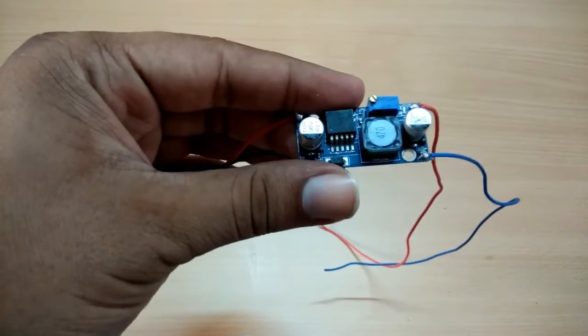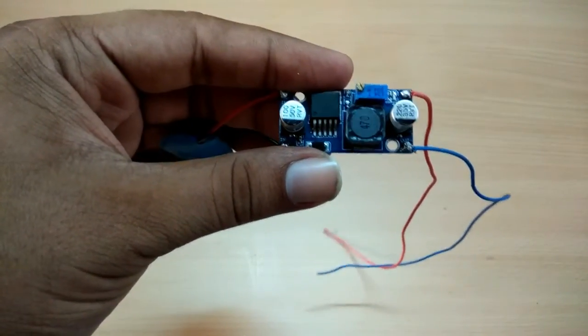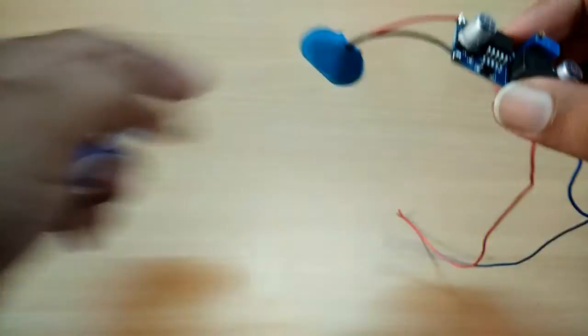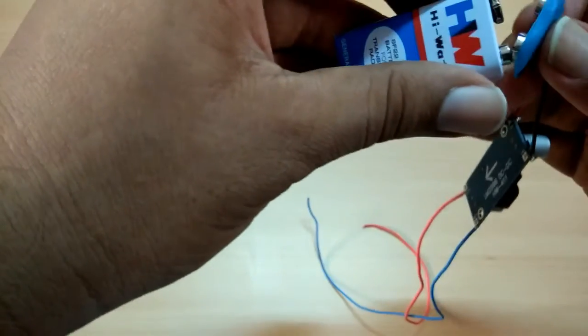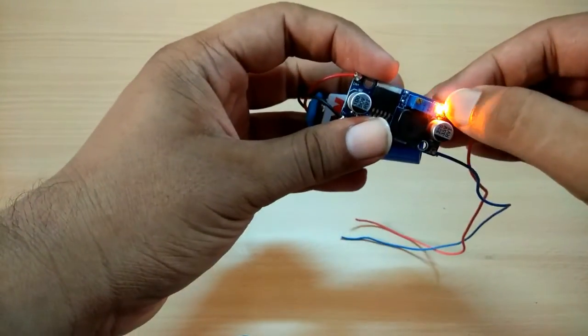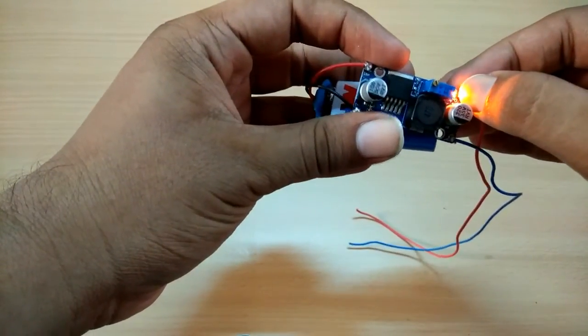After soldering those wires, now connect the battery with this circuit. You see there is a bright LED light glowing which means the circuit is okay.